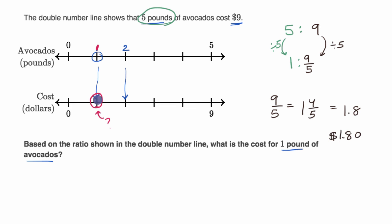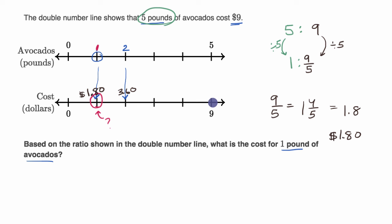So if you were to go on to this double number line, the cost of one pound of avocado — this point right over here — would be $1.80. If you said two pounds of avocados, well now you would double it, so this would be $3.60. And you would go on and on all the way until you got to nine dollars.